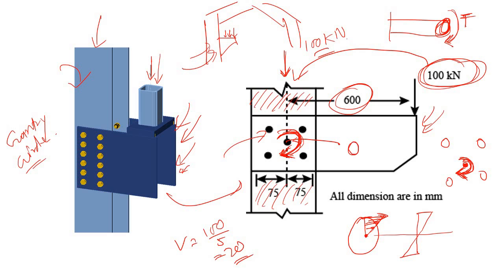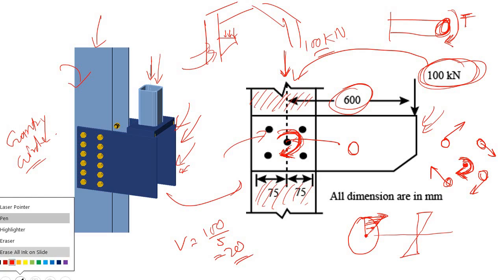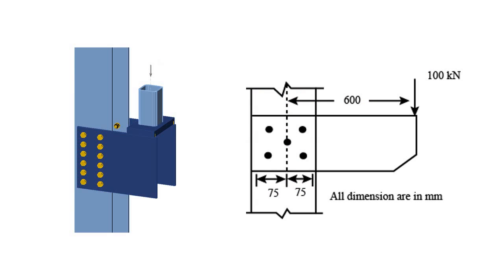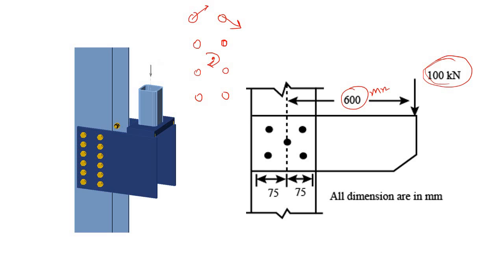All the torsion is carried by the outer bolts. Now let's say instead of five bolts we have multiple bolts — four rows. Applying the torsion created by 100 kN force with an eccentricity of 600 mm, the maximum torsional stress will be in the corner bolts, while the inner bolts carry less torsional stress.